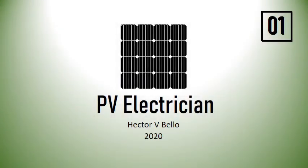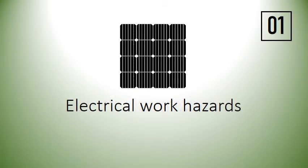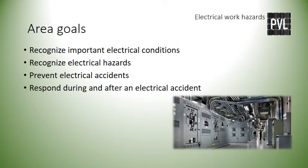PV Electrician by Hector V. Bello, April 2020. Area 1: Electrical Work Hazards. Area goals: to recognize important electrical conditions, recognize electrical hazards, prevent electrical accidents, and respond during and after an electrical accident.